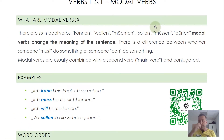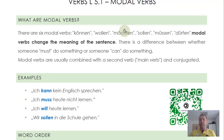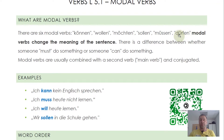So first question: what are modal verbs? There are actually six modal verbs in German: können — to can, wollen — to want, möchten — also to want, sollen — to should, müssen — to must, and dürfen — there is no 100% translation for dürfen.